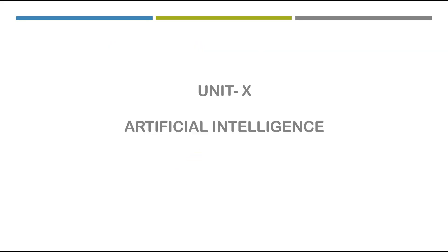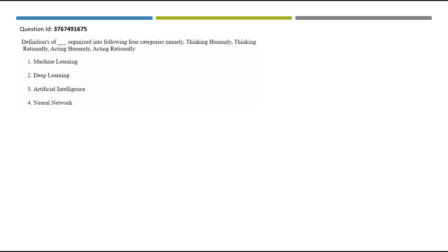Let's solve Unit 10 artificial intelligence questions on definitions. The options are organized into four categories: thinking humanly, thinking rationally, acting humanly, and acting rationally. The field actually trying to mimic what humans do is artificial intelligence, which includes machine learning, deep learning, and neural networks.